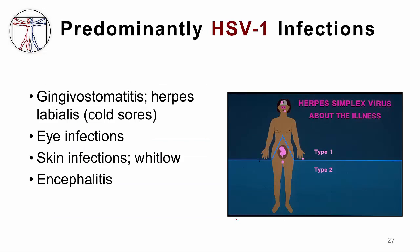HSV-1 infections include gingivostomatitis, which is oral infection, and in its reactivated form is referred to as cold sores. Other manifestations include eye infections, skin infections often referred to as whitlow, and herpes encephalitis. A picture shows the oral infections, eye infections, skin infection at the fingertip, and herpes encephalitis.